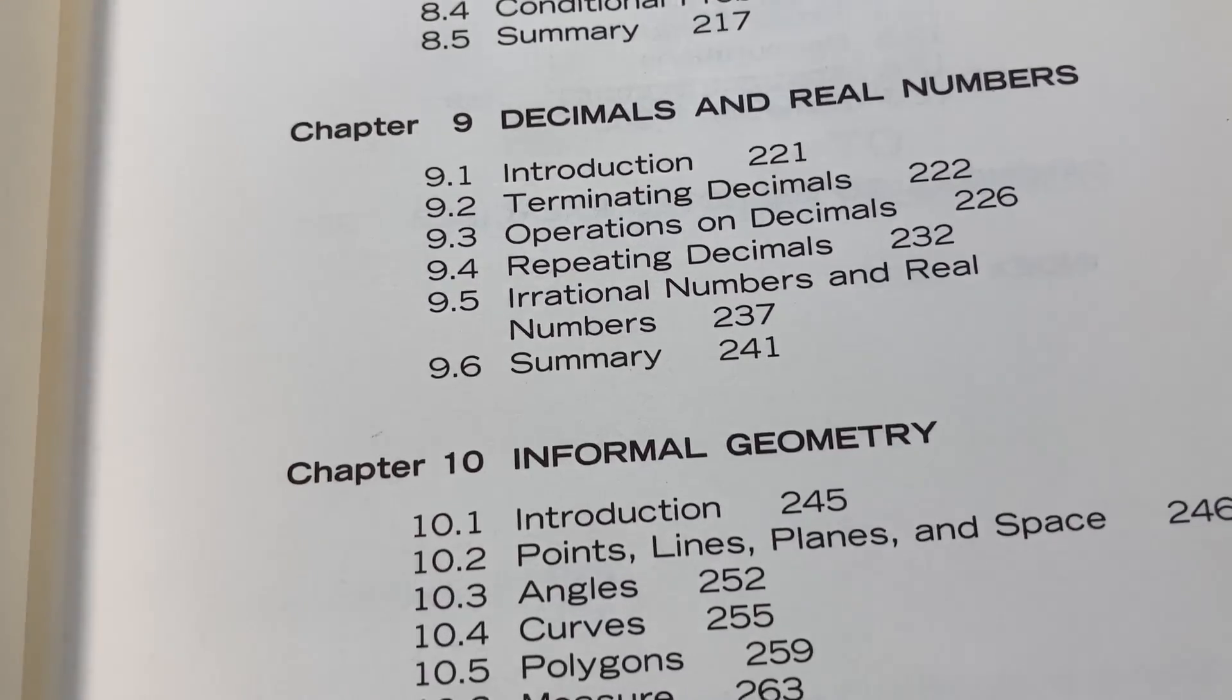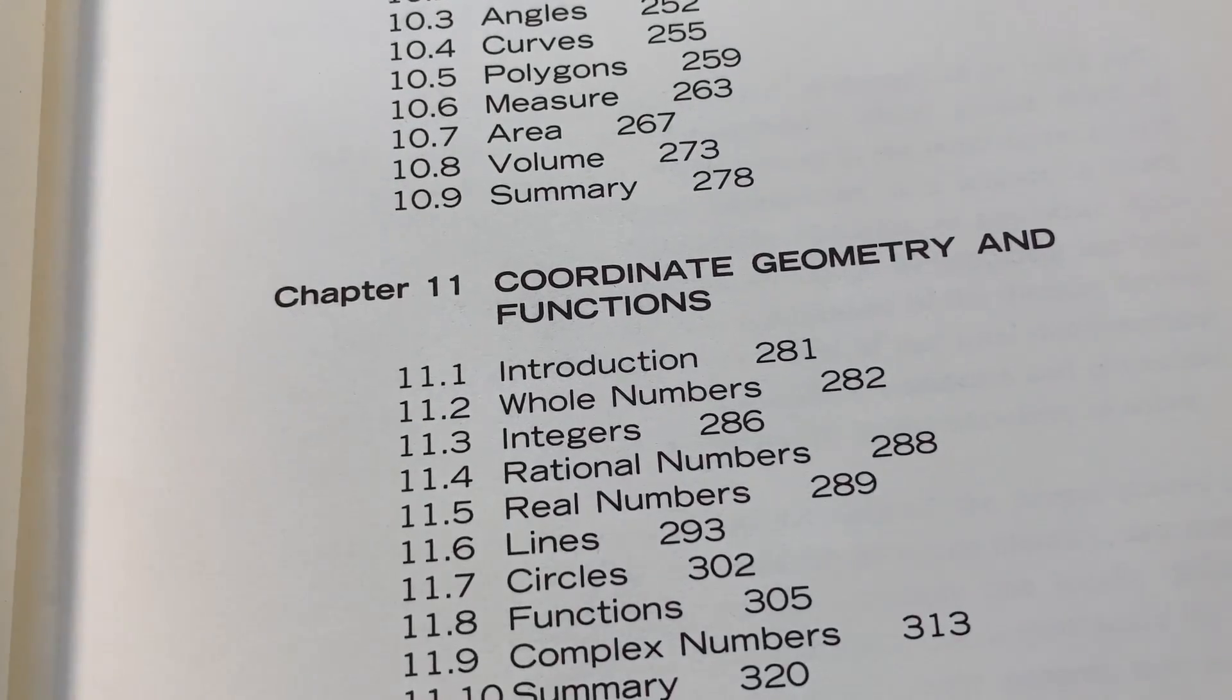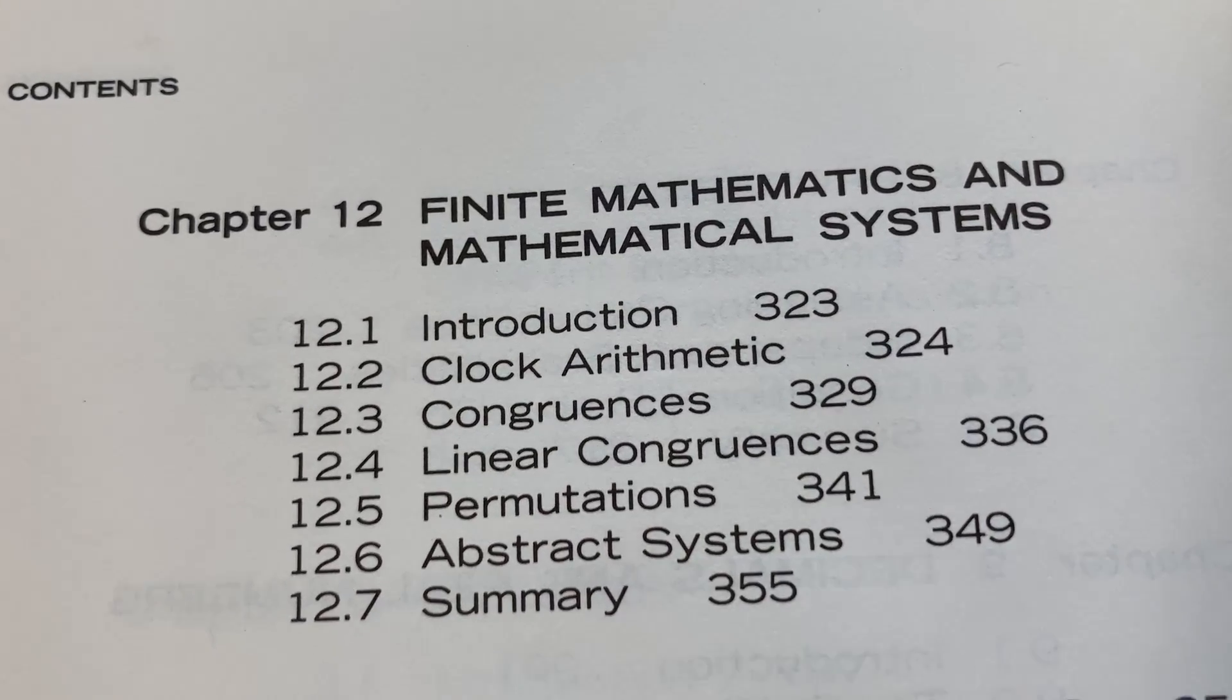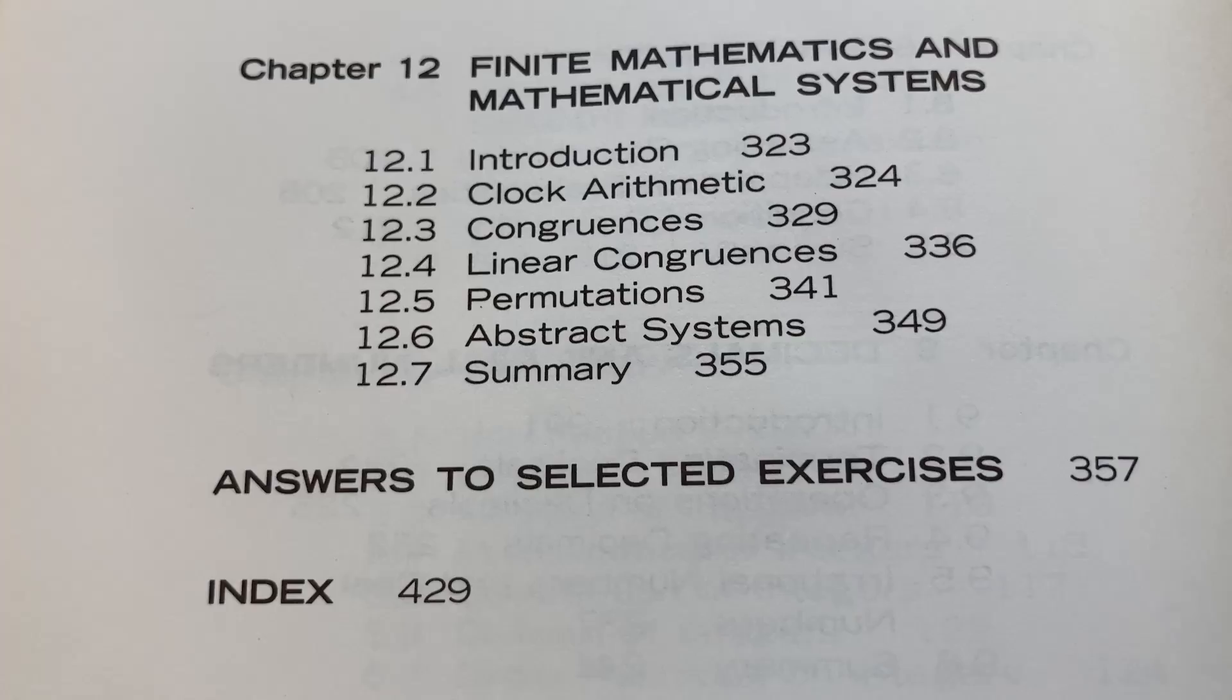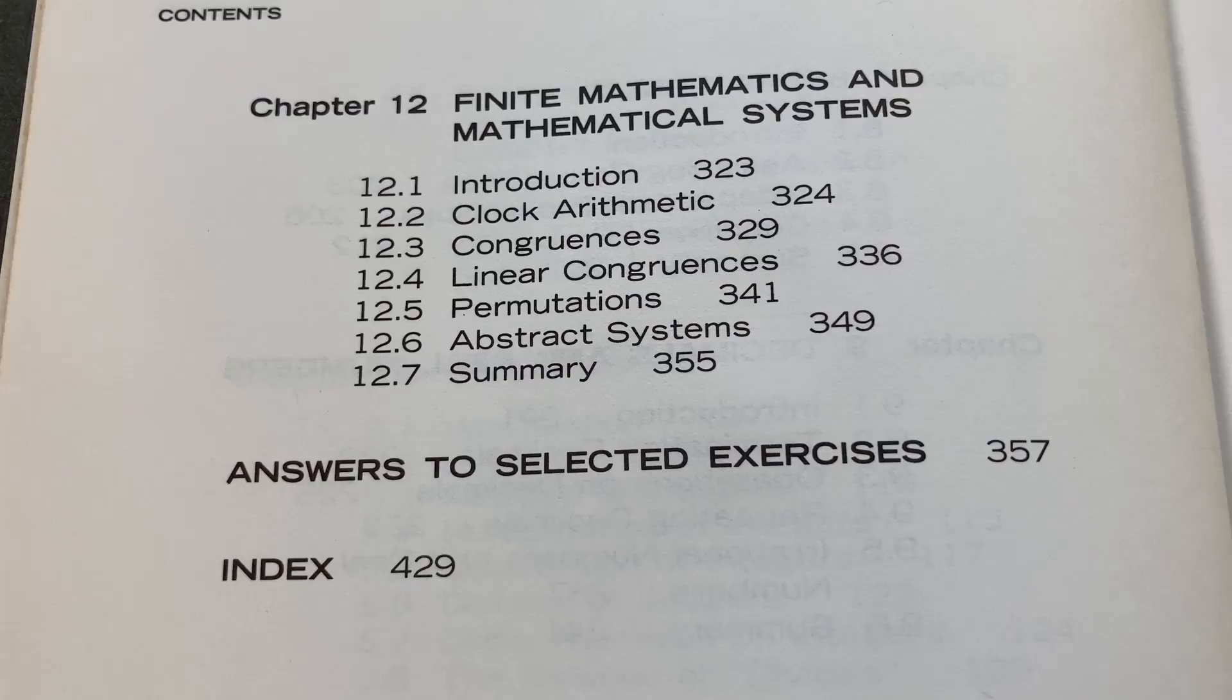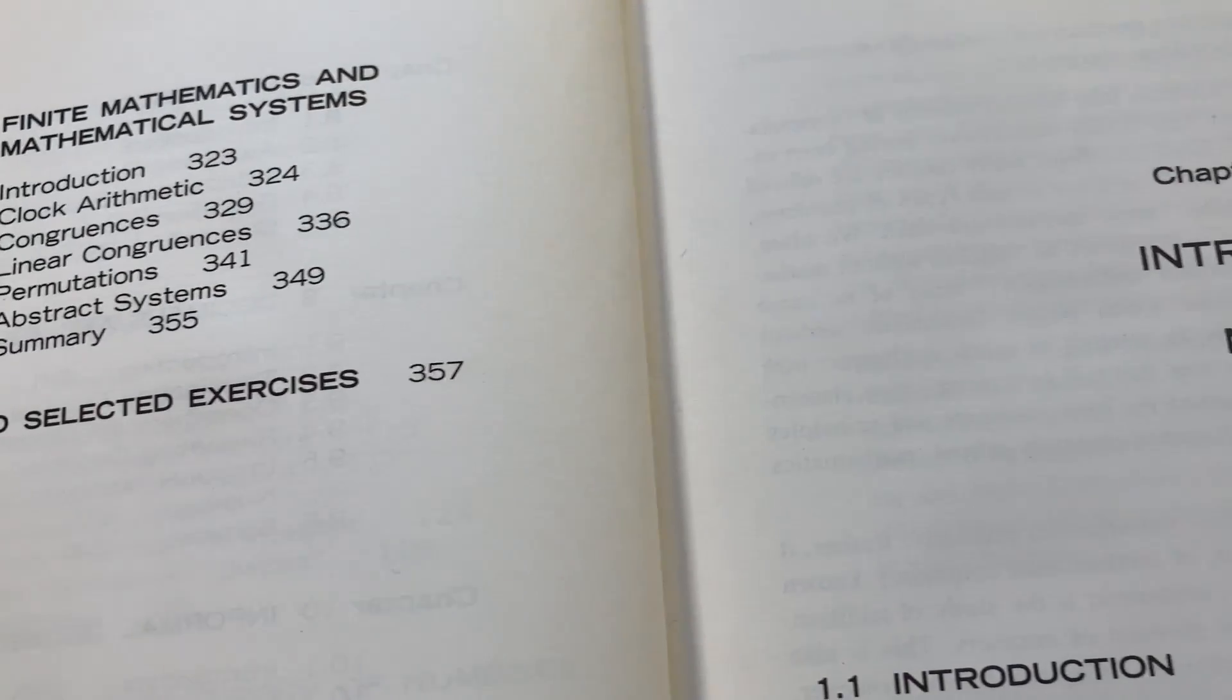Decimals and real numbers, some informal geometry, and then some coordinate geometry. Some of these things you would see in a college algebra class or a pre-calc class. The last chapter is chapter 12, which talks about finite mathematics and mathematical systems. And you do have some answers to some of the exercises. However, you don't have answers to all of them. For example, the author does have some exercises that are proofs, and those don't come with full solutions.